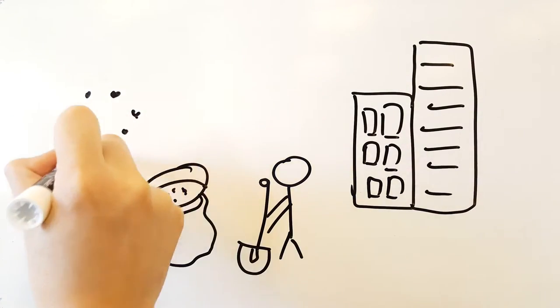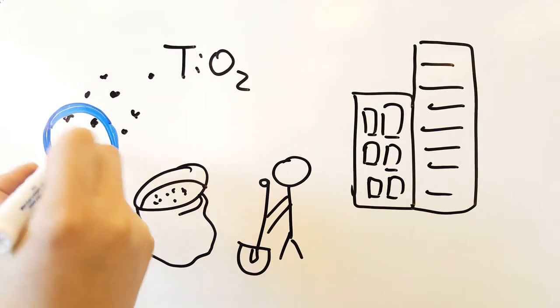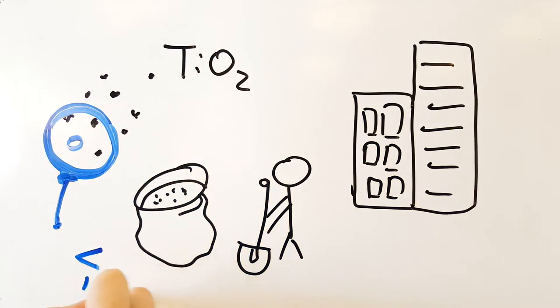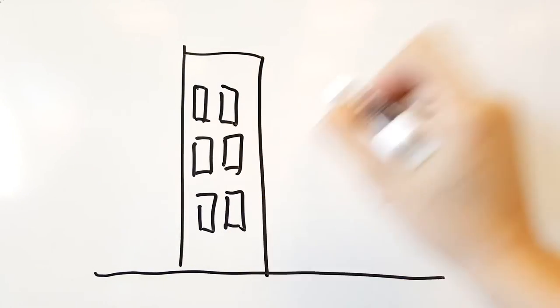This material, known as titanium dioxide, is made of tiny white particles that are less than 100 nanometers in diameter. After mixing them with the cement, they give the building a distinct white color.